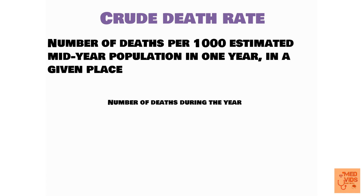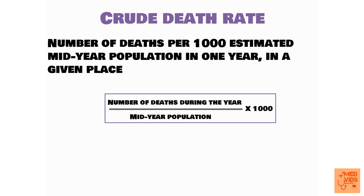The formula for crude death rate is: number of deaths during the year divided by mid-year population, multiplied by 1000. Mid-year population means the population as measured on the 1st of July — that is what is called mid-year population.